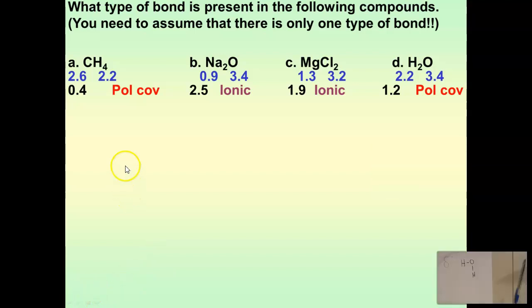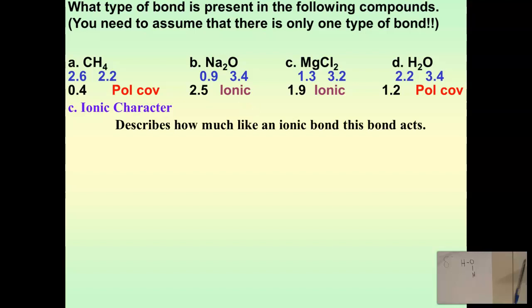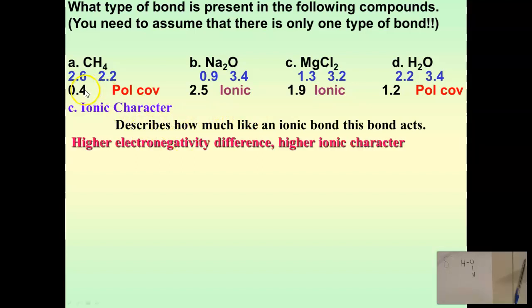One of the last topics is ionic character. All bonds — whether polar covalent or ionic — some are better polar covalent bonds or better ionic bonds, and that's where the term ionic character comes in. Ionic character describes how much like an ionic bond your bond is. All we have to do is look at the electronegativity difference — the bigger the number, the better the ionic bond and the more ionic character it has.